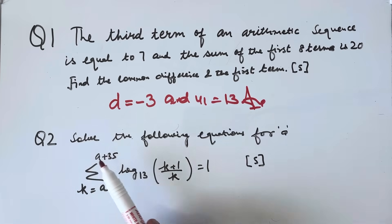Question number 2: Solve the following equation for a: summation k from a to a plus 35, log to the base 13 of (k+1)/k equals 1. This is of 5 marks. Value of a will be 3.